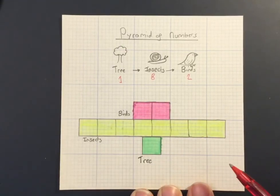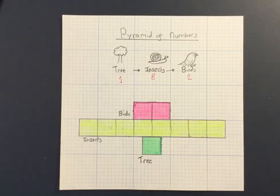So remember, pyramids of numbers show the number of organisms in each trophic level, and they don't always have to be pyramids.